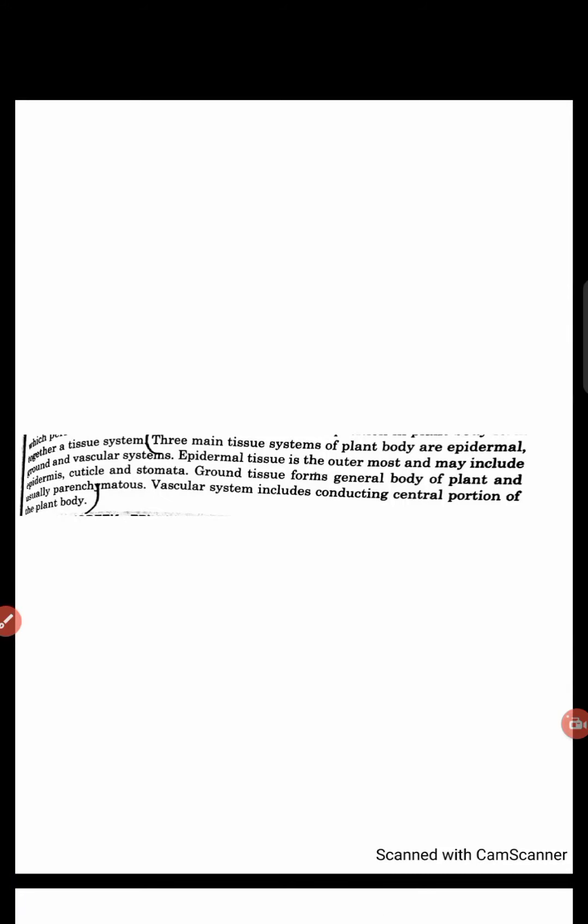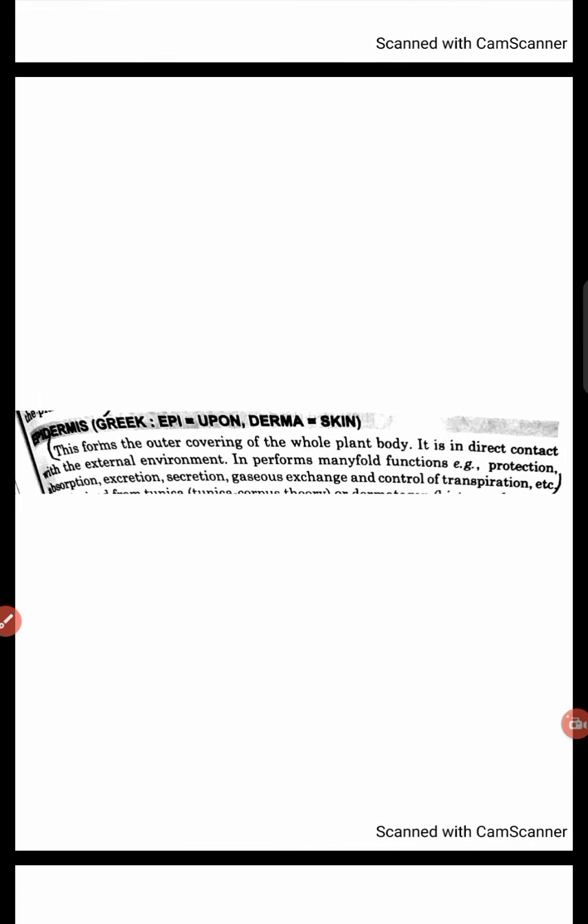Hello everyone, today we are going to discuss about three main tissue systems of plant body: epidermis, cuticle, and stomata. So let's get started. First, talking about epidermis. As the name suggests, epi means upon.